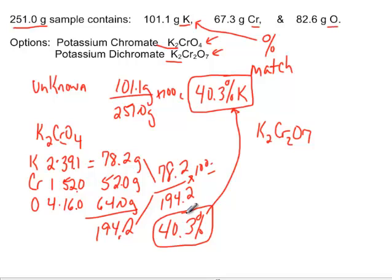But just to make sure, let's look at the other one. We've got potassium, and there's two of them. They're each 39.1, so 2 times 39.1 is 78.2, just like before. We've got chromium, there's two of them, 52.0. So there's more chromium than we had before - we've got 104 grams.